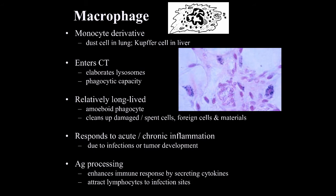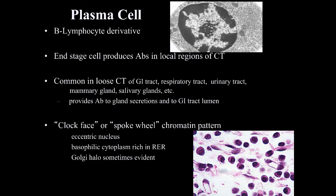Macrophages can enhance immune response by secreting different cytokines and attract lymphocytes to sites of infection. The plasma cell is a B lymphocyte-derived cell, shown here in an electron micrograph and in a light micrograph with numerous plasma cells visible. Plasma cells are an end-stage cell that produce antibodies within local regions of connective tissue. They are very common in the loose connective tissue of organs like the GI tract, the respiratory tract, the urinary tract, and organs engaged in secretion like the mammary gland or salivary glands.